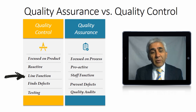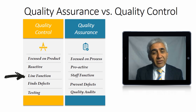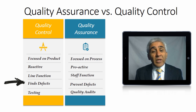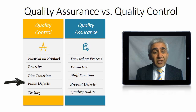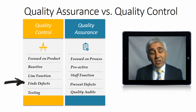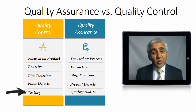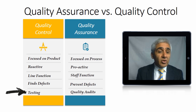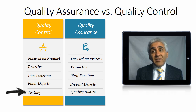QA is performed by a staff function, whereas QC is performed by a line function. In QA the attempt is to prevent defects, whereas in QC the emphasis is on finding defects and making sure those defects do not occur again. The tools used are also different: QA uses audits as a tool, while testing is the main tool for quality control.